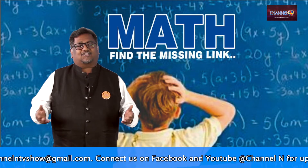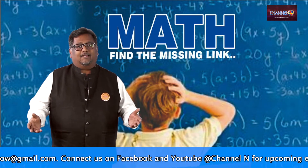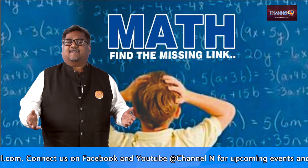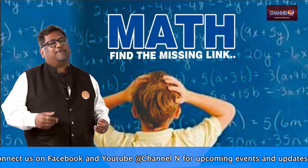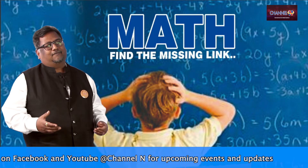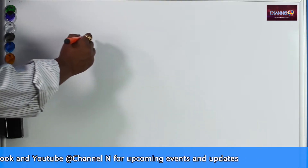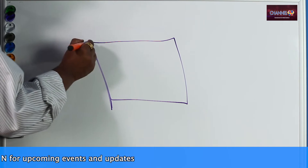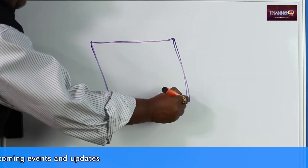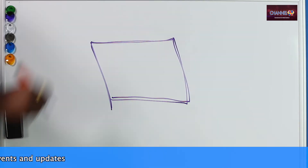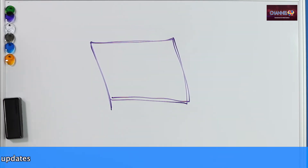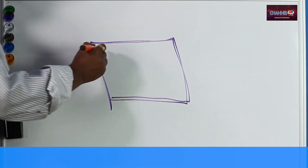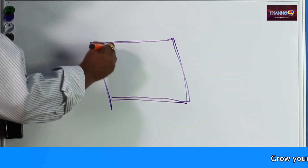Now let's do it another way. There's a cage, so let me draw a cage. There are eight animals, so let me draw eight circles.